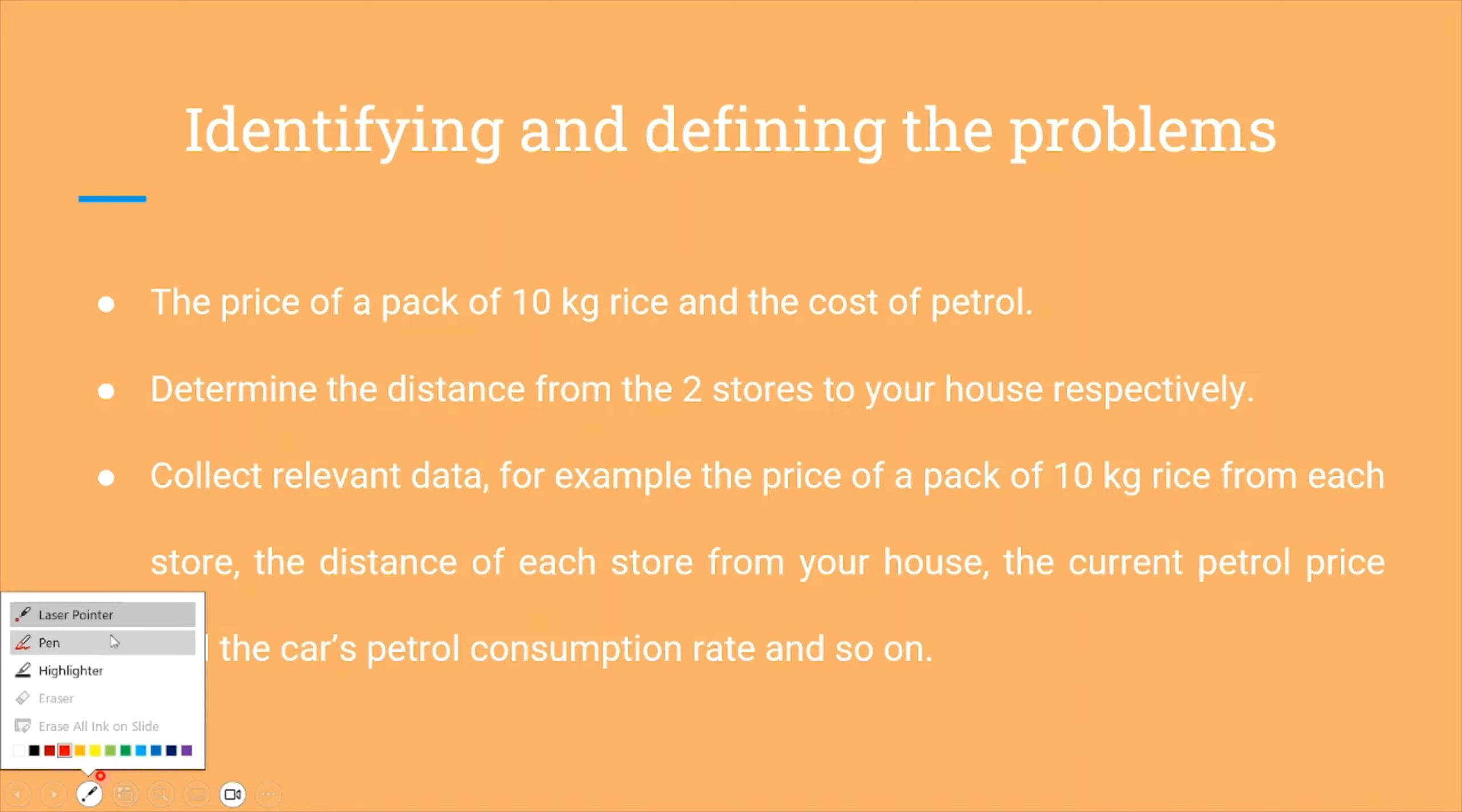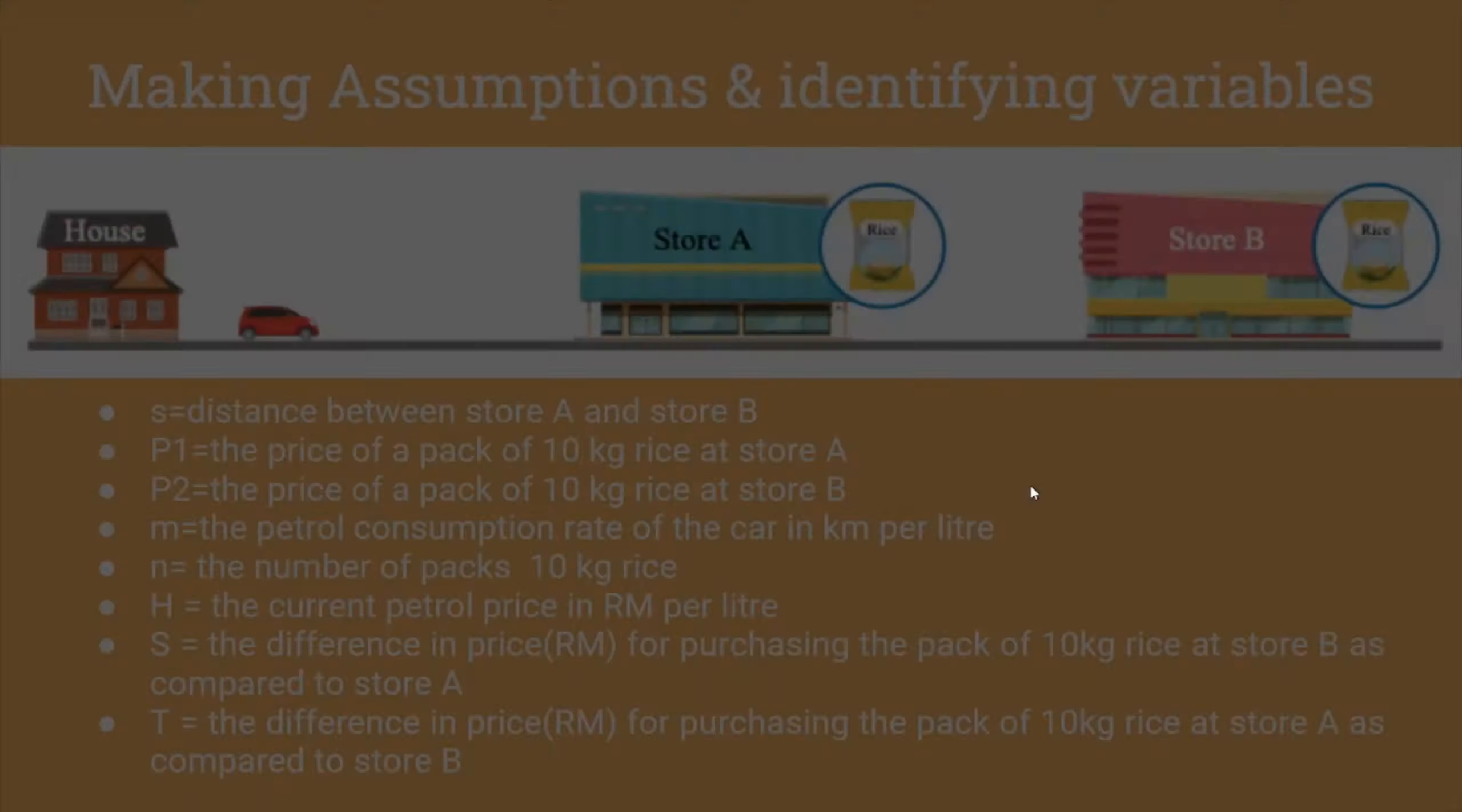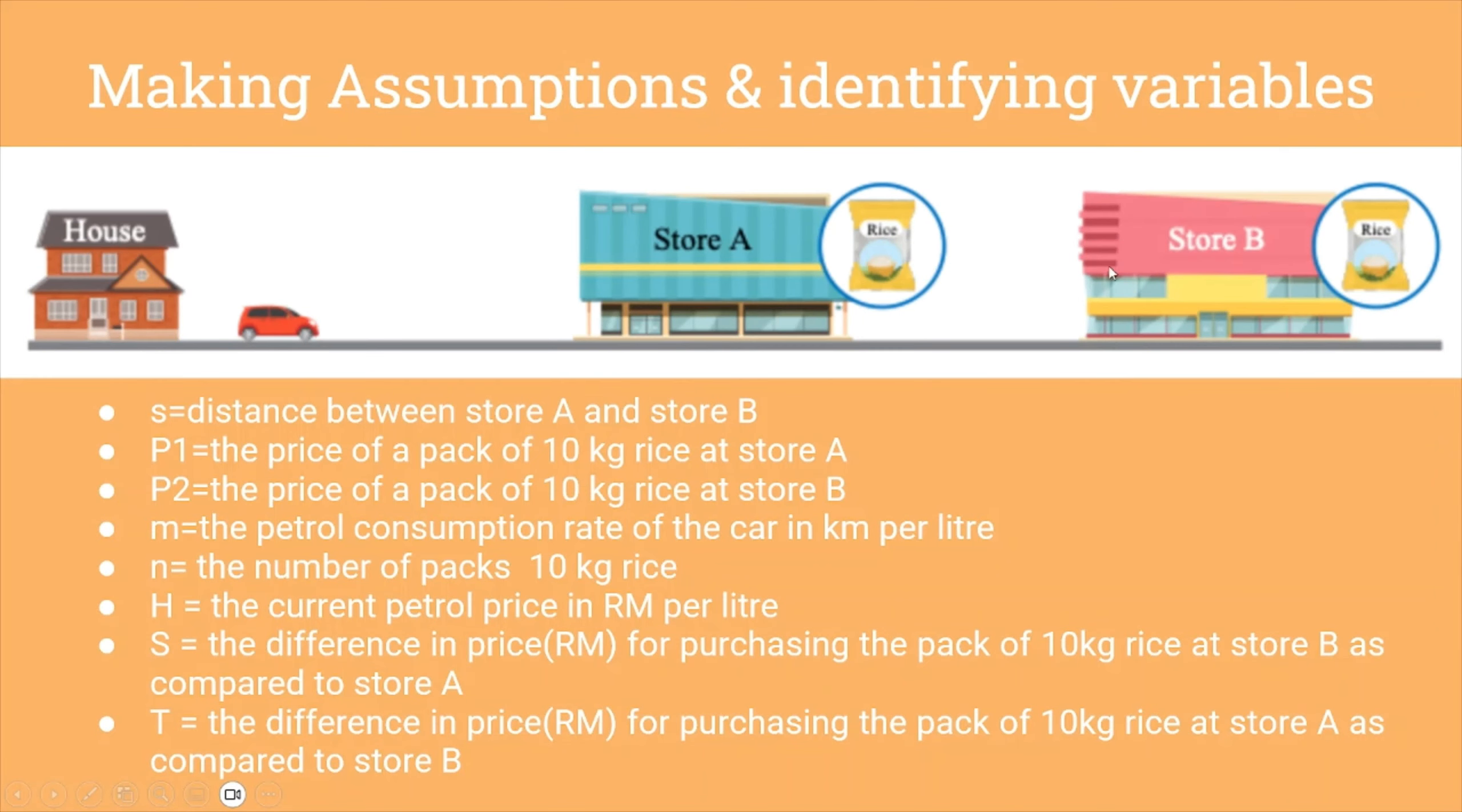Continuing on, we will make assumptions and identify the variables. For example, S would be the symbol of the distance between store A and store B, P1 the price of the 10kg rice at store A, P2 the price of the 10kg rice at store B and so on, as you can see over here.